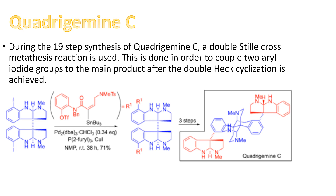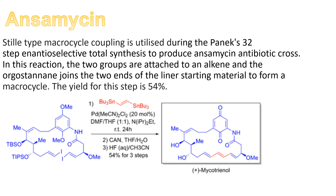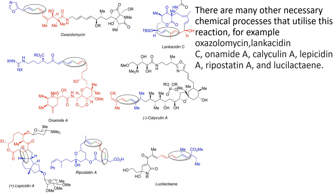The next industrial process I'm going to talk about is the manufacture of Ansatrienin. A Stille-type macrocycle coupling is utilized during the 32-step enantioselective total synthesis to produce Ansatrienin antibiotic. In this reaction, the two groups are attached to an alkene and the organotin joins the two ends of the linear starting material to form a macrocycle. The yield for this step is 54 percent. In the bottom photo you can still see the same principles — the tin complexes and where they join the two molecules together to form the desired product.